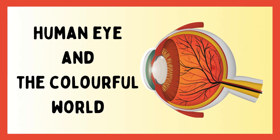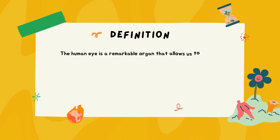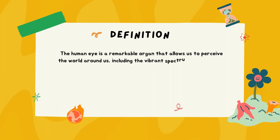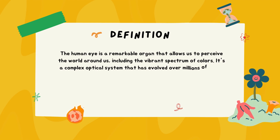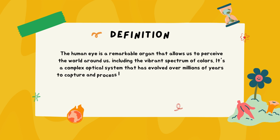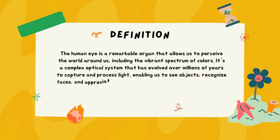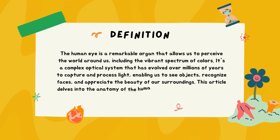The human eye is a remarkable organ that allows us to perceive the world around us, including the vibrant spectrum of colors. It's a complex optical system that has evolved over millions of years to capture and process light, enabling us to see objects, recognize faces, and appreciate the beauty of our surroundings.